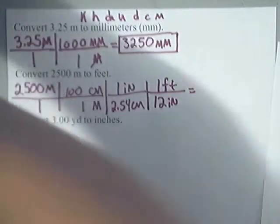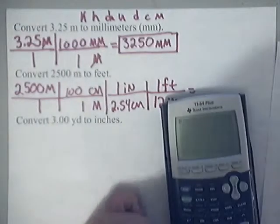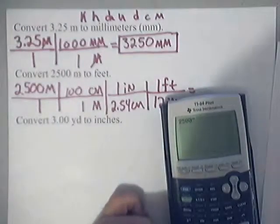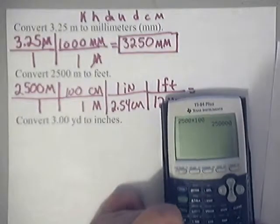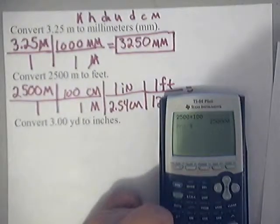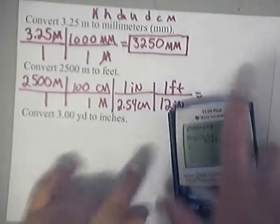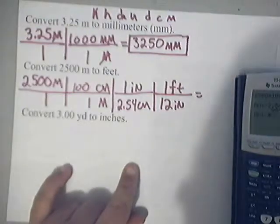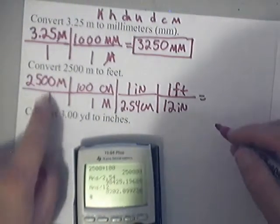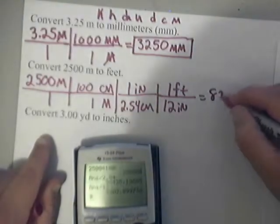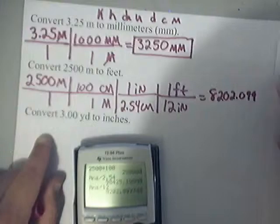So basically we just need to take a handy-dandy calculator and punch this in. We have 2,500 times 100 times 1 times 1, which is 250,000 divided by 2.54 and divided by 12. That ends up being, now we need 2 sig figs, that ends up being 8,202.099738.